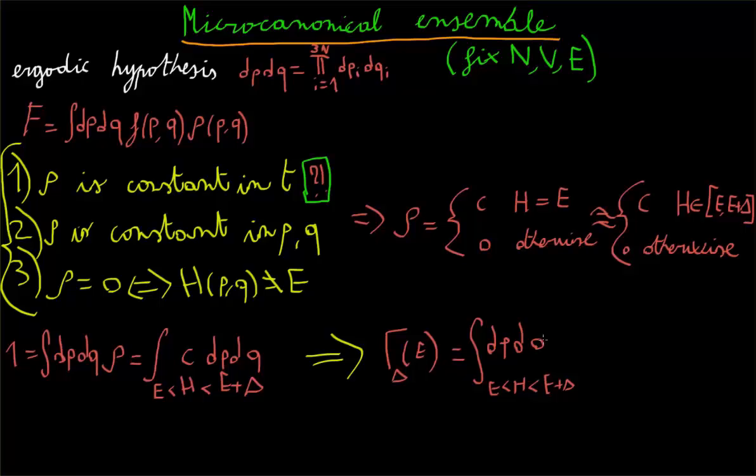dq, all divided by h to the 3n, where h is the Planck constant. And then C will simply be 1 over gamma delta of E.